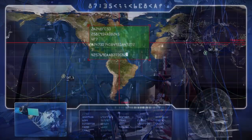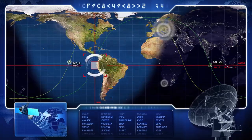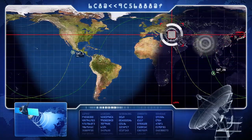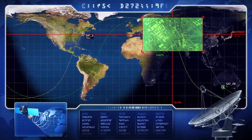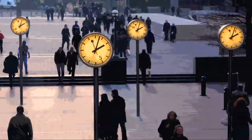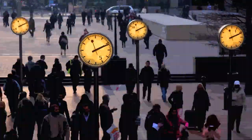We need ultra-accurate time for a host of applications, including the global positioning system, telecommunications, and the internet. But do we really need time accurate to within 1 300 millionth of a second per year?